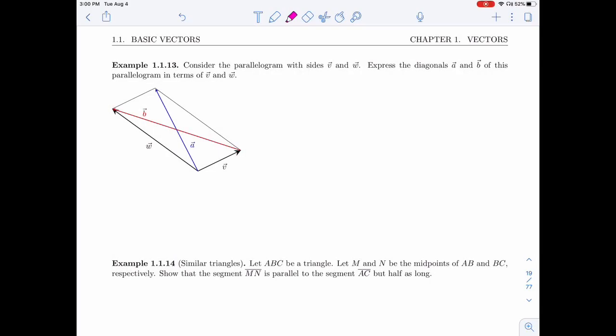In example 1.1.13, we're given a parallelogram and vectors for its sides. According to the picture, we have one side that's V and one side that's W. I want to write the diagonals A and B in terms of the vectors V and W. This is a bit what came out of the last example.